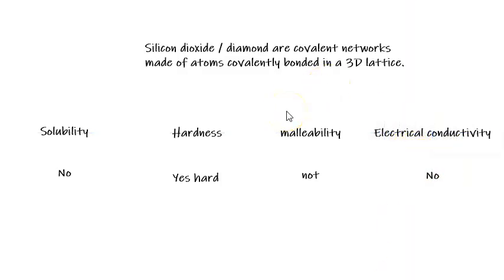That is how we would describe the structure and bonding of 3D covalent networks, and the properties of them. Thanks very much for watching. Like and subscribe for more Chemistry 2.4 videos.